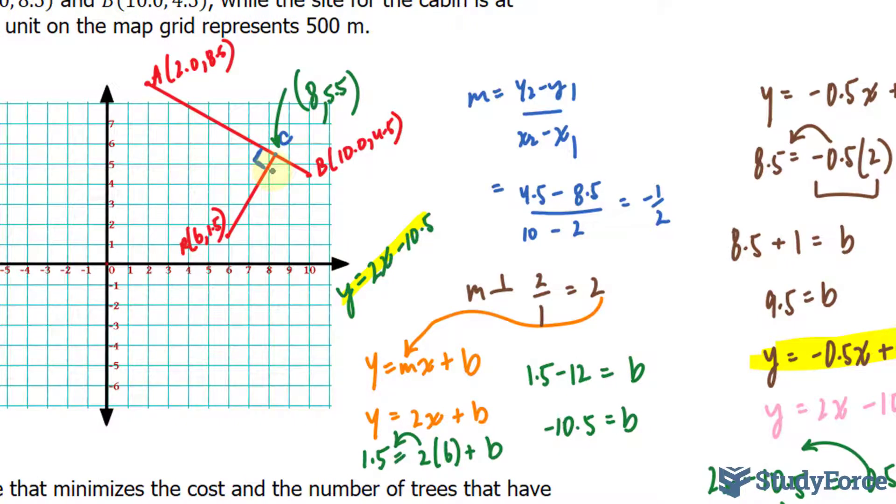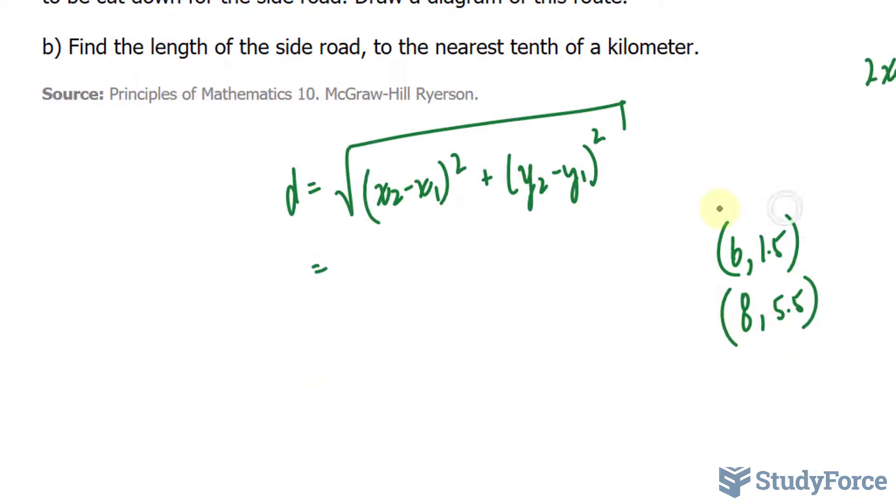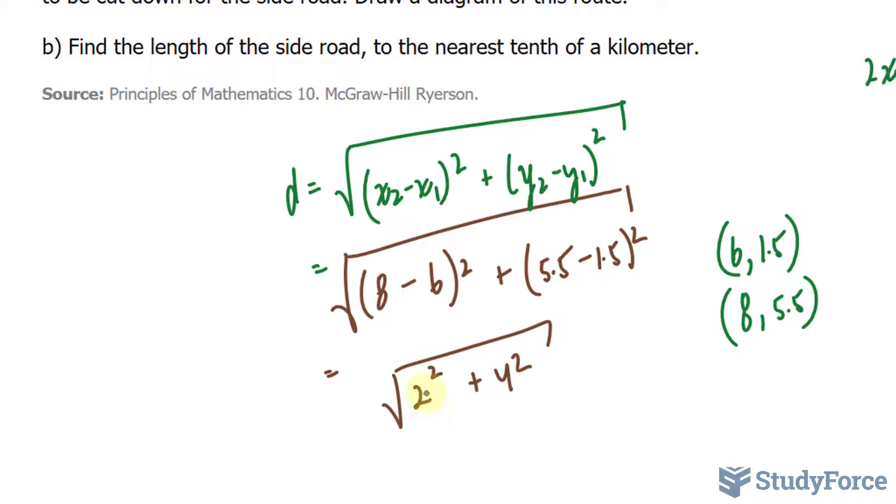Our last step is to find the length of R to C. And I can use these coordinates along with the distance formula. The distance formula is d equals the square root of x2 minus x1 squared plus y2 minus y1 squared. Remember, the coordinates were 6 and 1.5 and 8 and 5.5. x2 will be 8 minus 6 squared plus y2 is 5.5 minus 1.5 squared. This all gets square rooted. We have 2 to the power of 2 plus 16. The square root of 20 is the distance.